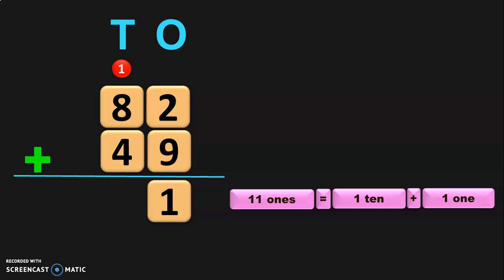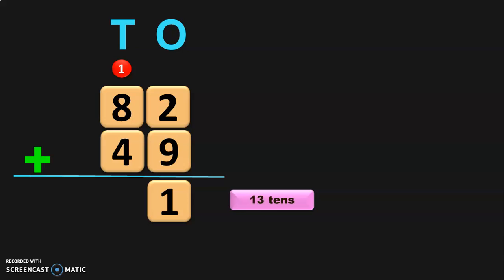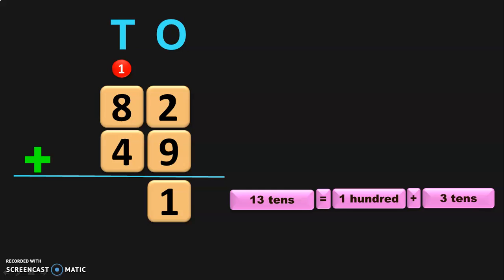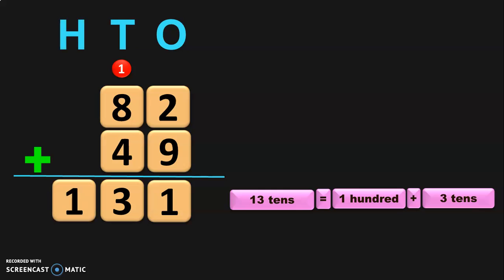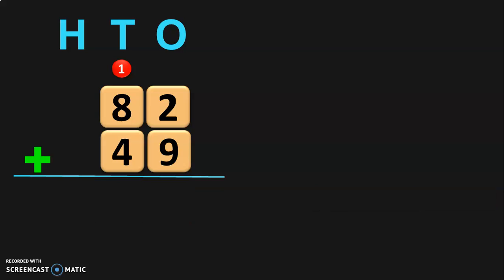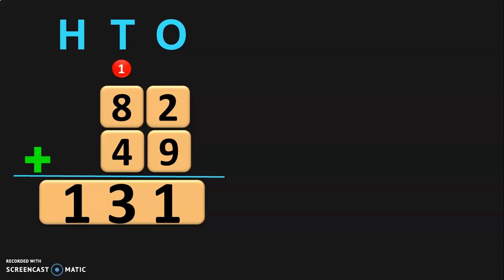Now, add the digits in the 10's place. 1 plus 8 will give you 9, and 9 plus 4 will give you 13. So, we have 13 tens now. 13 tens is nothing but 130. It can be regrouped as 1 hundred plus 3 tens. Write down the 3 tens in the 10's place and take the 1 hundred to the next place value, which is the 100's place. So, the sum of 82 plus 49 will give you the answer 131.